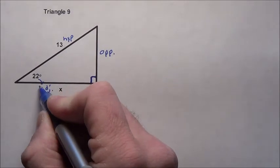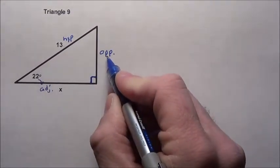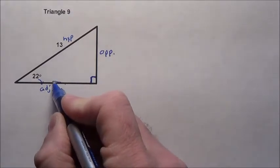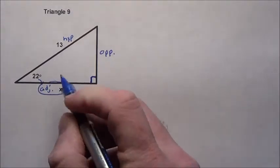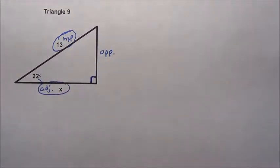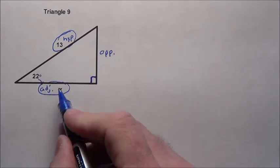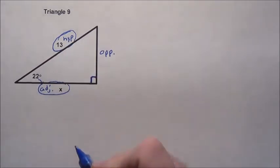The side closest to the 22-degree angle is adjacent. Across from it is the opposite. We're trying to find the adjacent side, and the measurement we're given is the hypotenuse. So I need a trig function that deals with adjacent and hypotenuse.